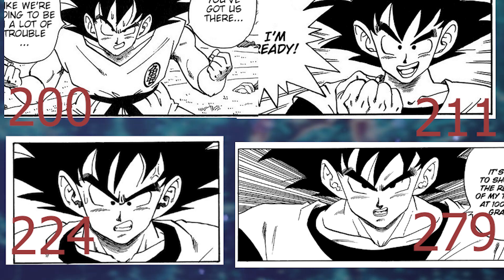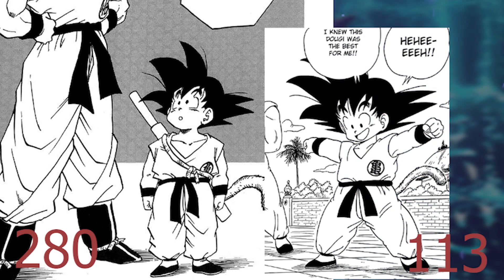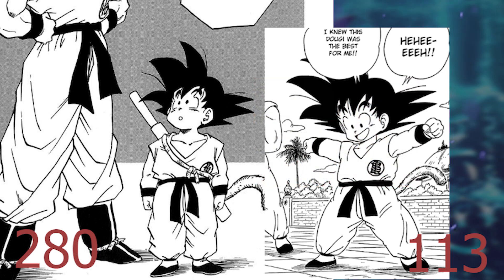The next chapter after this, chapter 280, features Kid Goku, and it's quite interesting to compare how Toriyama used to draw him versus chapter 113 — 167 chapters earlier. Especially with the clothing you can notice the line work is much less rounded now, and Kid Goku's eyes aren't those little half circles anymore — they look more like the way we saw Goku growing up in chapter 196. Other things like the hair don't spike out as long either.